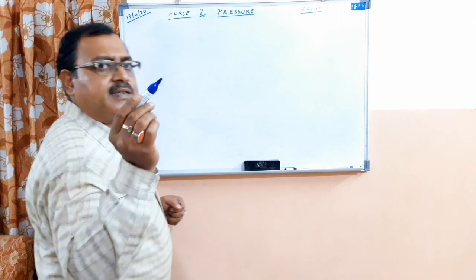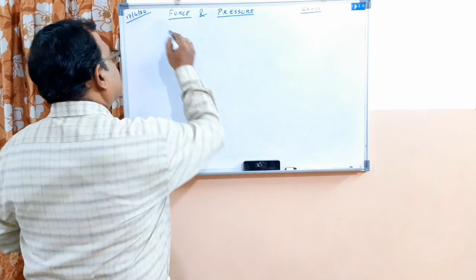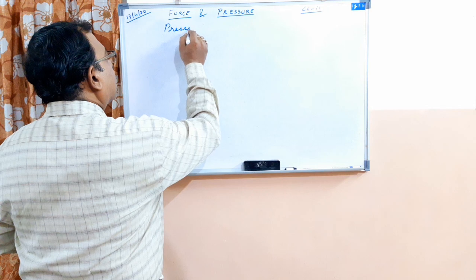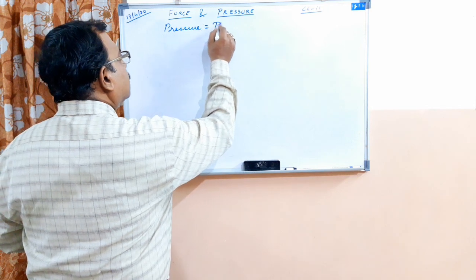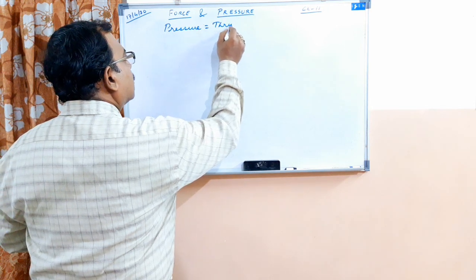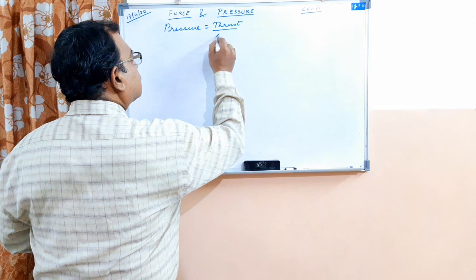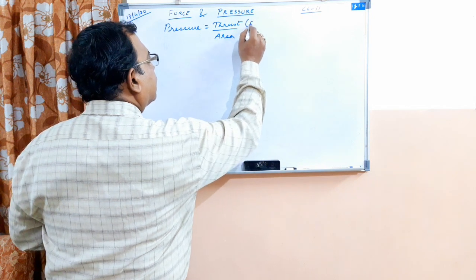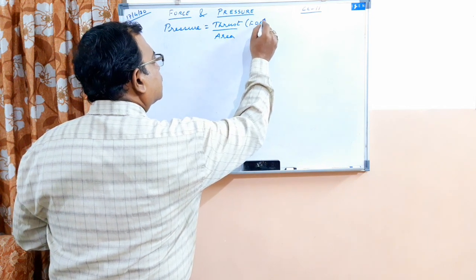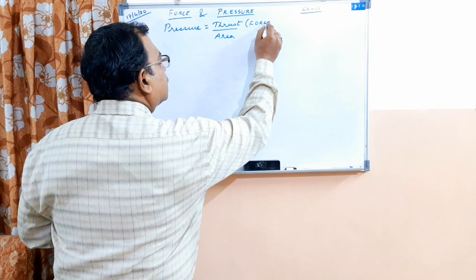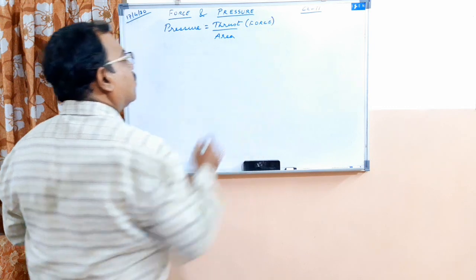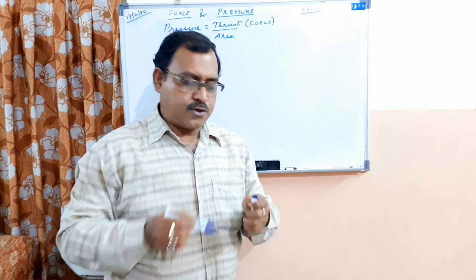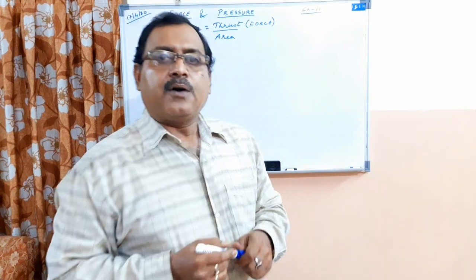We have done yesterday that pressure is equal to thrust divided by area. This thrust is also called force. Thrust per unit area is called pressure.